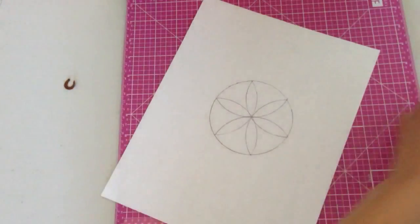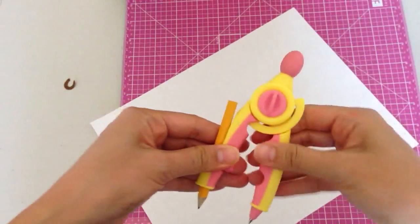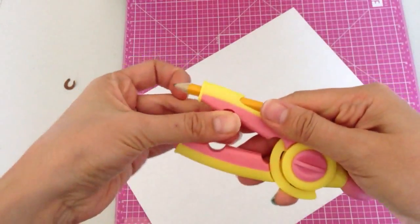So that's how you draw a flower to make these patterns with a compass. Now you can get super fancy. I'm going to do smaller ones. I'm going to adjust the pencil.